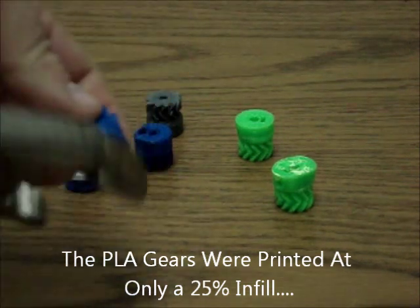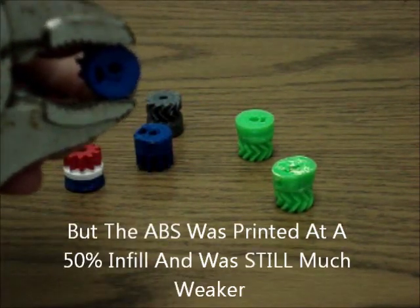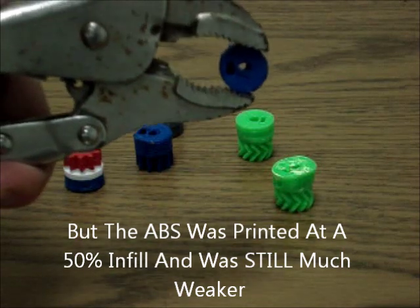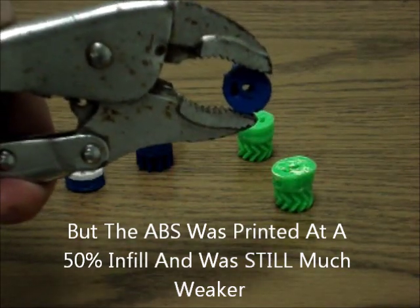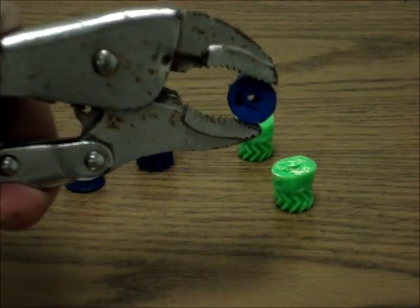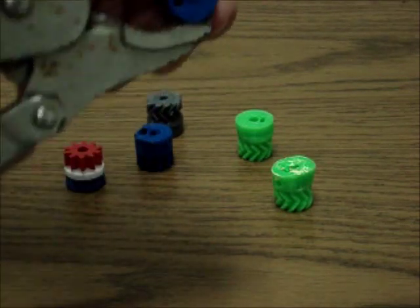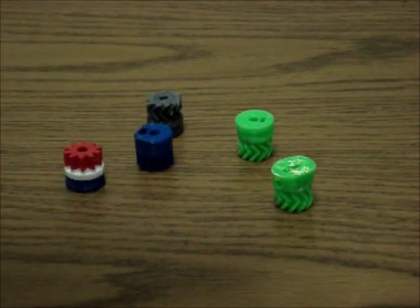So using the same vice grips with PLA, I'm going to take one of these and you take it same place and it won't actually crush. I'm actually putting way more force on this than I did with the ABS and it puts bite marks, barely that you can barely even tell in there.